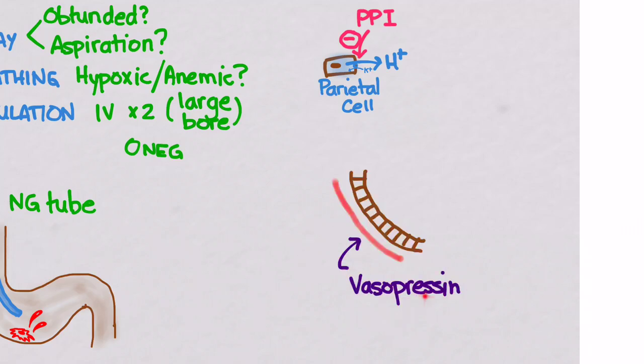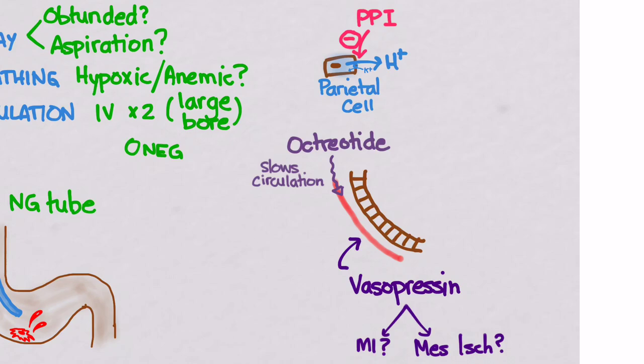Vasopressin is a vasoconstrictor that will decrease blood flow to the gastric mucosa. It unfortunately has also not been shown to decrease mortality, but does increase the probability of heart attacks and mesenteric ischemia. Octreotide, on the other hand, slows down circulation without those other side effects. So maybe a safer choice.